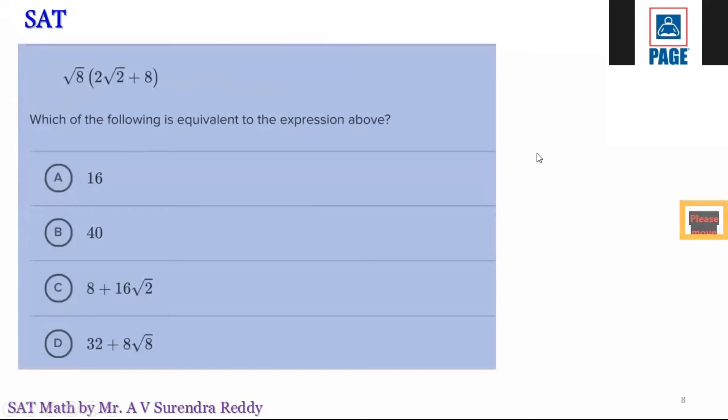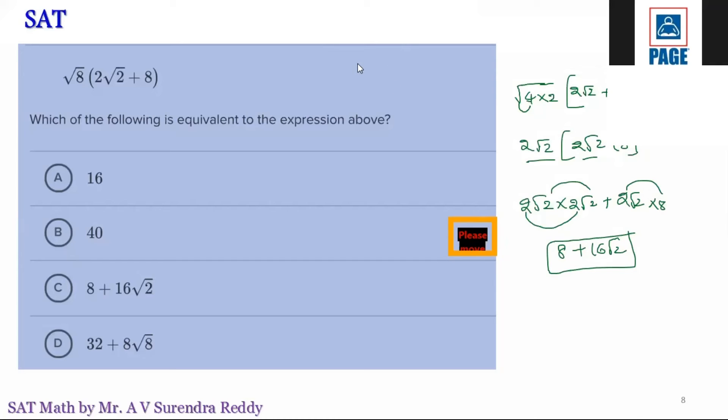Next question. So this is √8(2√2 + 8). √8 means √(4·2). This is 2√2 + 8. √4 is 2, so √8 is 2√2. So 2√2(2√2 + 8). 2√2 · 2√2 as a positive term, then 2√2 · 8. 2 · 2 = 4, √2 · √2 = 2. 4 · 2 = 8. 8 · 2√2 = 16√2. So this is 8 + 16√2, which is option C.